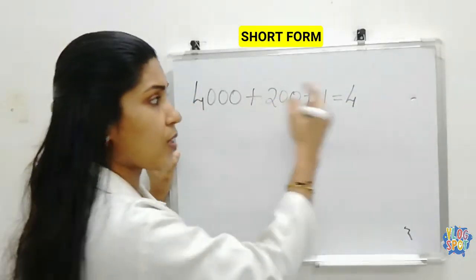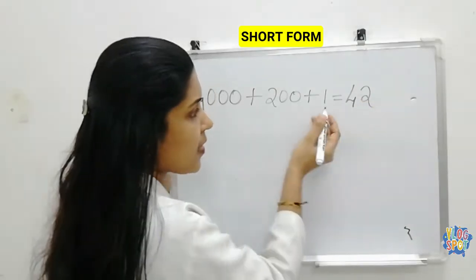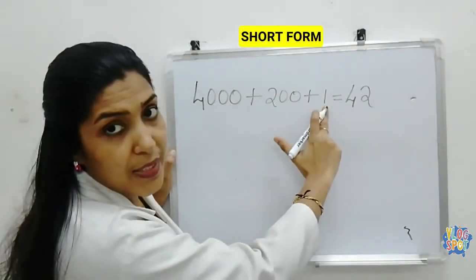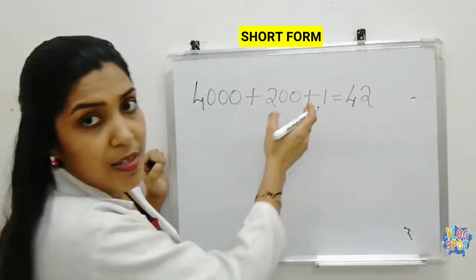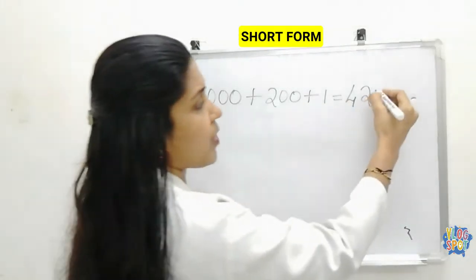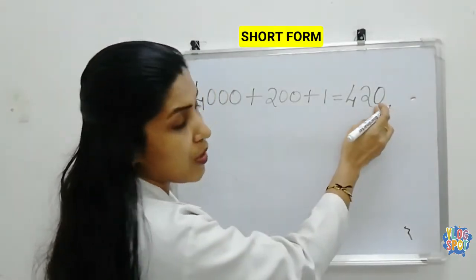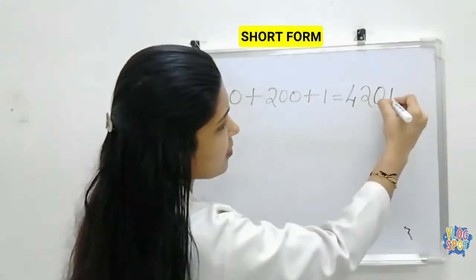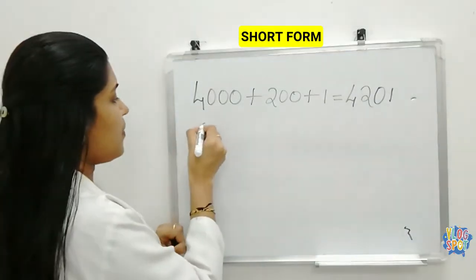200 means 2 is in the hundreds place. There is no tens number here — only a ones number — so there is no tens place digit. That means you write 0 in the tens place. Then 1 is in the ones place. So the short form is 4,201.